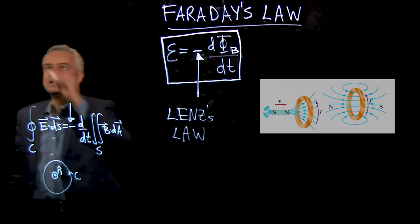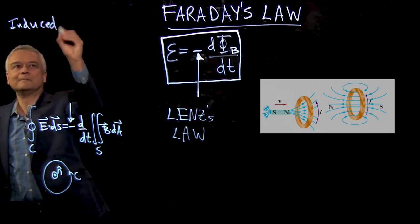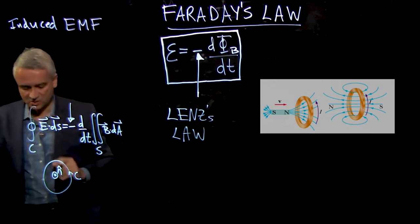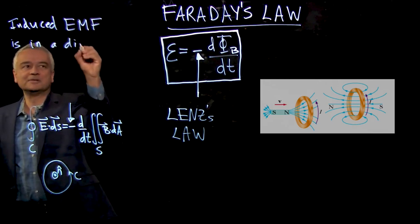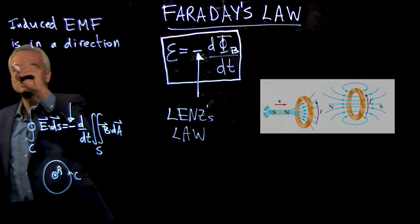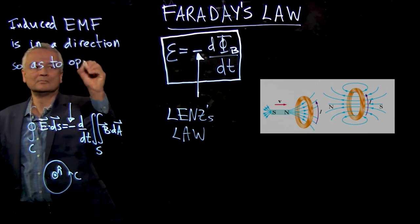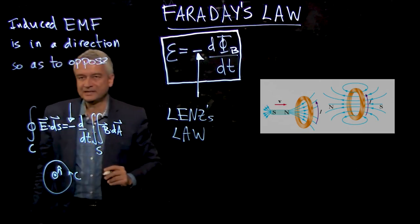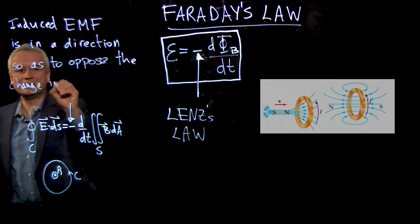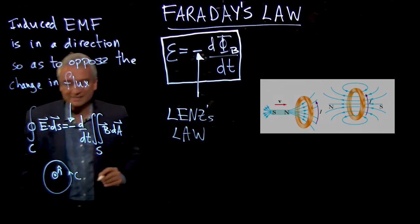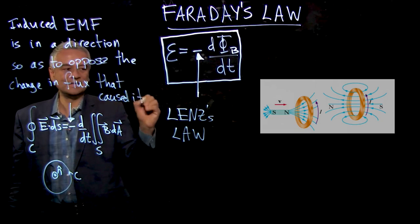And so Lenz's law, in words, is the statement that the induced EMF in the loop, induced according to Faraday's law of induction, is always in the direction so as to oppose the change in flux. So the induced EMF is always in the direction so as to oppose the change in flux that caused it.